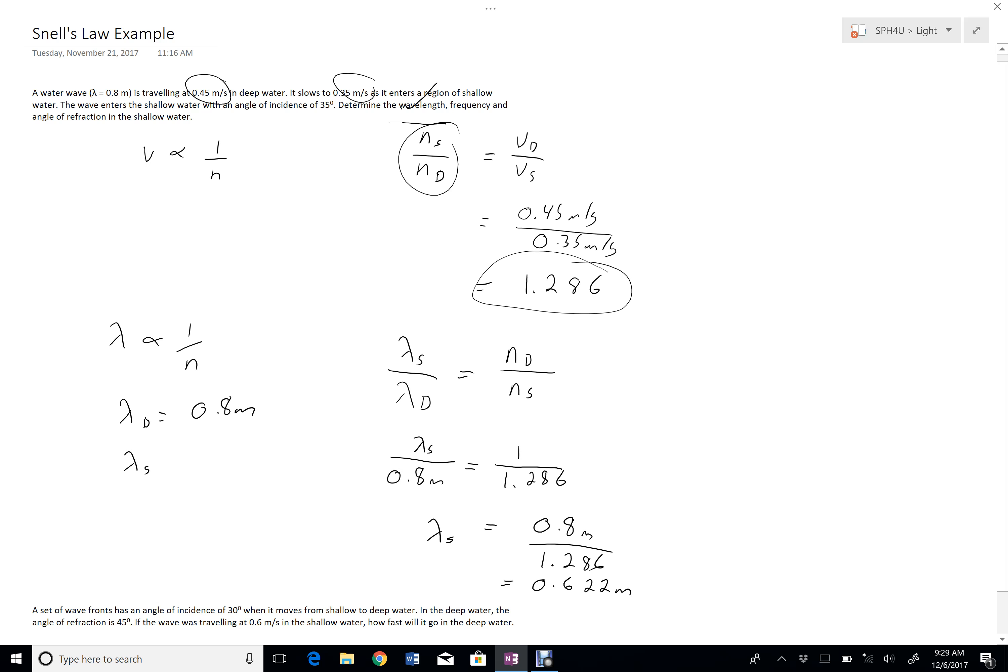I need frequency and angle of refraction. So let's do angle next. For the angle, we're going to use Snell's Law. Ns sine theta s is going to be equal to N deep sine theta deep. So I'm going to solve this, bringing Ns over Nd so that I can get this the way that I had it. So Ns divided by Nd. And then I'll leave my other parts alone. Sine theta s and sine theta d.